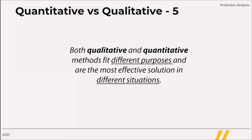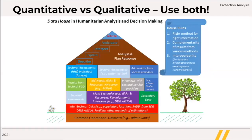Both quantitative and qualitative methods fit different purposes and are the most effective solution in different situations. We should always stay away from considering that the word data is synonymous with the word numbers. For example, data on persons with disabilities is much more than just the estimated number of persons with disabilities in a community. Barriers, resources, dynamics, coping strategies, and cultural understanding of disability are often more important information to develop inclusive programs than the number of persons with disabilities. So use both qualitative and quantitative methods, each to collect the information they are fit to collect and obtain a complete picture.